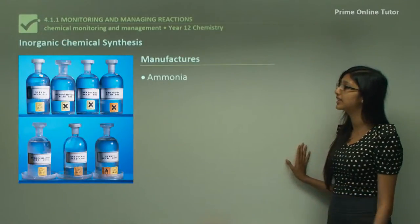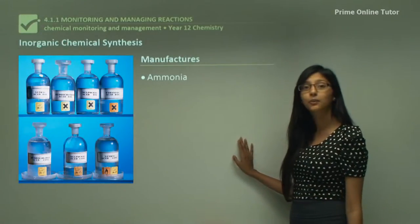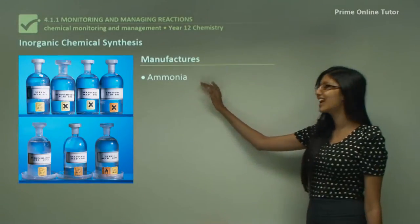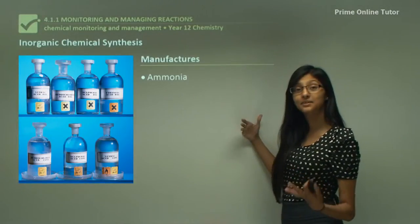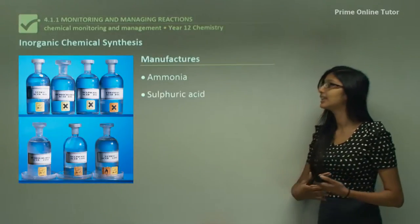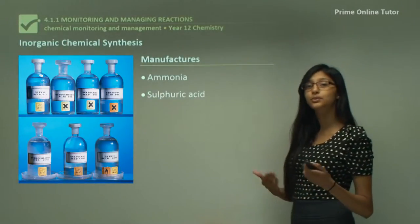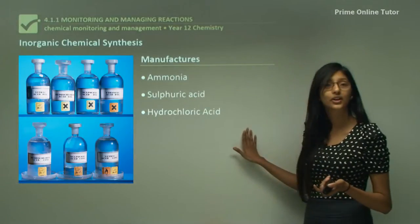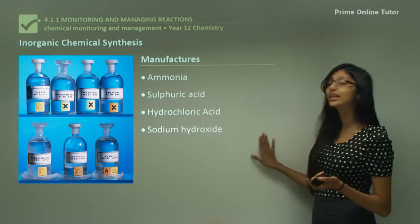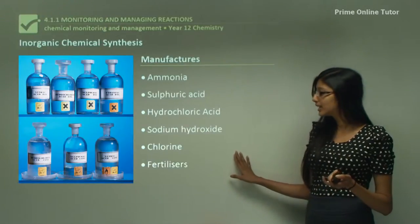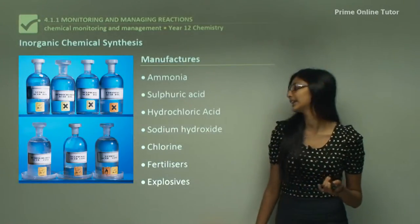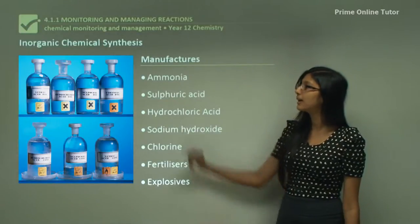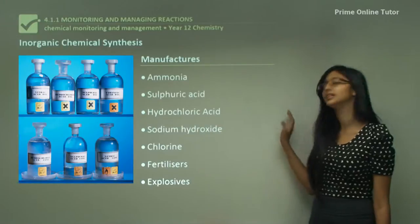First of all we have the inorganic chemical synthesis industry. They actually manufacture ammonia that we use as disinfectants to clean our floors and ovens. Then we have sulphuric acid, which you would probably use in your school laboratory, also hydrochloric acid, sodium hydroxide, chlorine, fertilizers, and explosives. So as you can see, these chemicals are provided by our inorganic chemical synthesis industry.